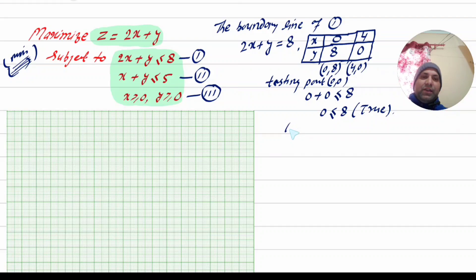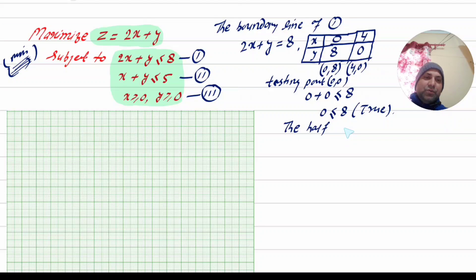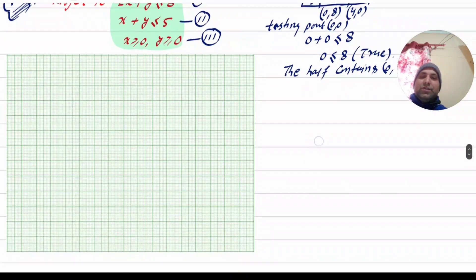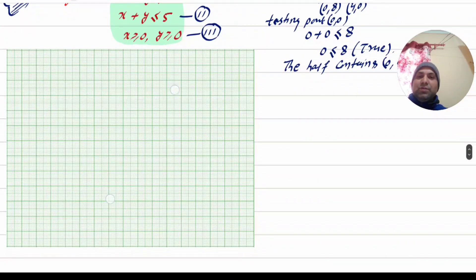If we take the half plane, we will assign this inequality's half plane. The half plane is determined by the testing point. The half plane contains the origin (0, 0), because substituting (0, 0) satisfies the inequality.